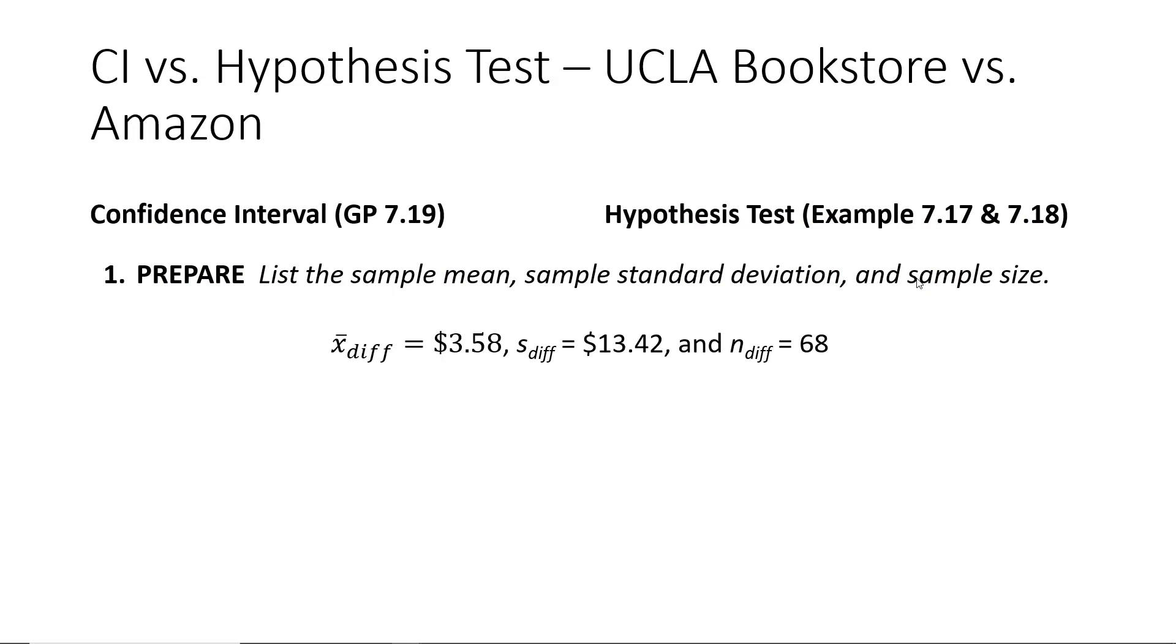Now, I want to take a moment to compare and contrast what you were supposed to do for the confidence interval construction that was part of Guided Practice 7.19 and compare that with what the textbook provided for the hypothesis test in examples 7.17 and 7.18. For both of those inferential statistics techniques, the PREPARE step was essentially the same for these three quantities: the sample mean of differences, the standard deviation of differences, and the sample size of the differences.